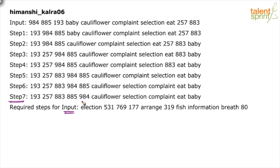The numbers have been arranged in ascending order: 193, 257, 883, 885, 984. All the words are together too, but their order — C, S, C, E, B — doesn't look like alphabetical order, and neither is it reverse alphabetical. So what is the logic? Cauliflower, selection, complaint, eat, baby — what could it be?